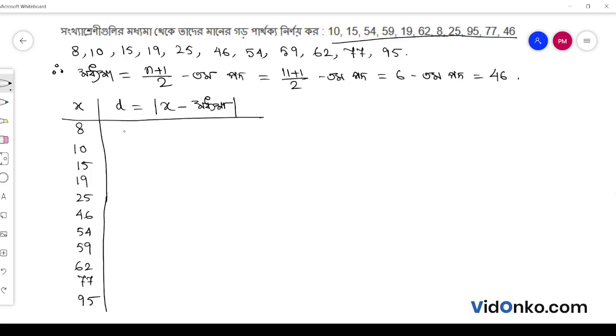Now calculate the deviations. The deviations are: 8 minus 38 equals 46, 10 minus 36 equals 46, 15 minus 31 equals 46, 19 minus 27 equals 46, 25 minus 21 equals 46.